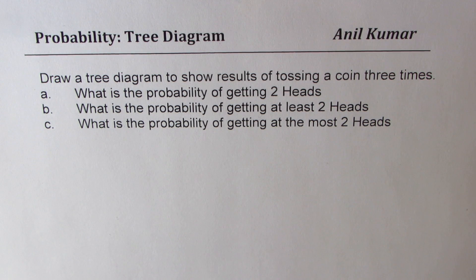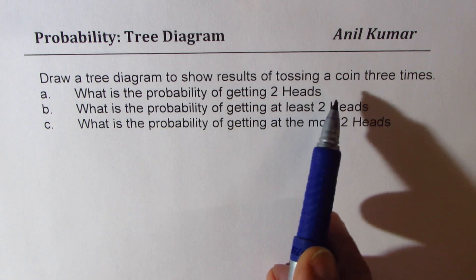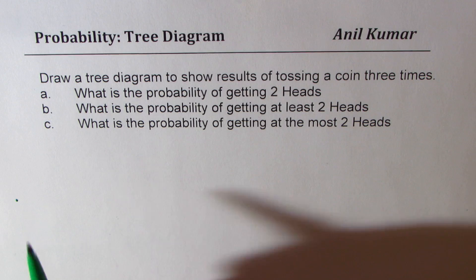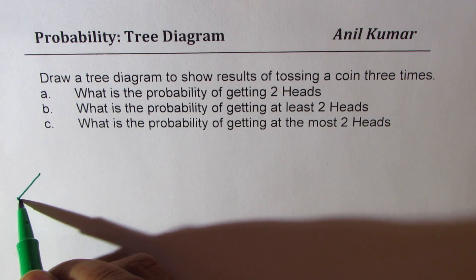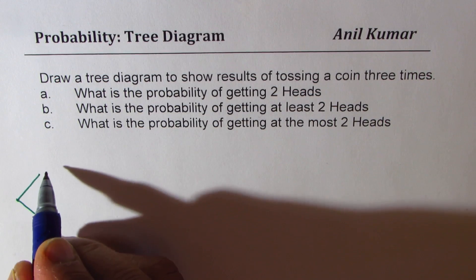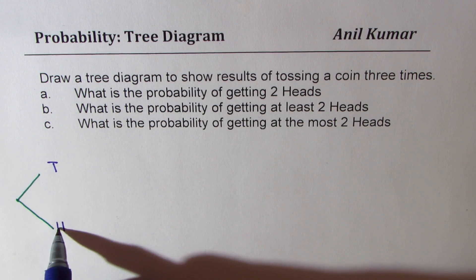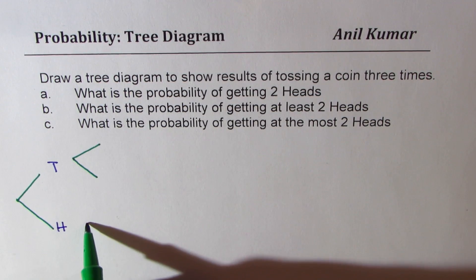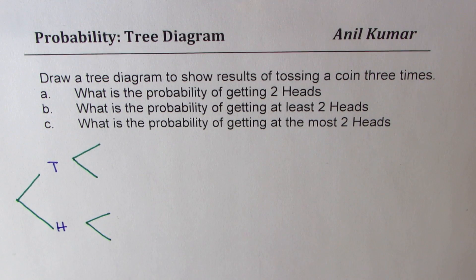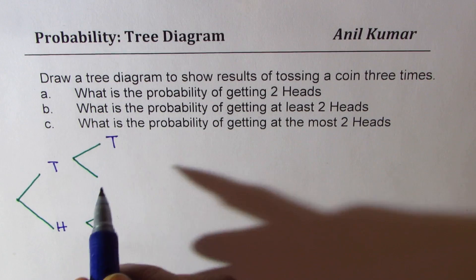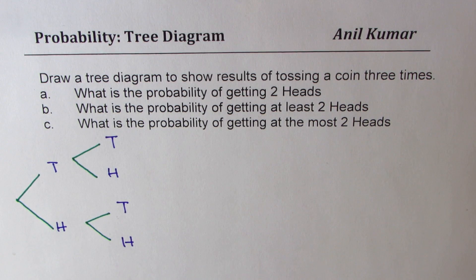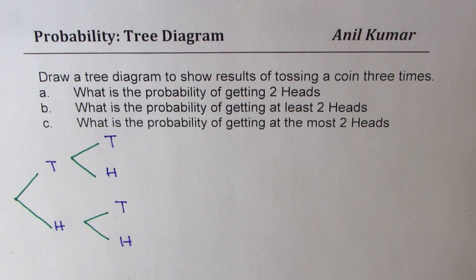Let us try to understand them. First let me draw a tree diagram of tossing three coins. In the first toss we could get either a tail or a head. So let me write this as tail or head — this is our first toss. Now again we could get either a tail or a head. We are also assuming that both are fair coins, that is to say that the probability of getting tail or head is 50-50.